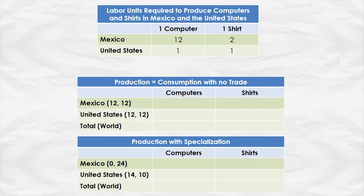Remember our basic data is in the top figure right here, and we want to answer: suppose there are 24 units of labor — 12 devoted to computers, 12 to shirts. How many computers and shirts in Mexico? Well, if Mexico devotes 12 units of labor to producing computers, and it takes 12 units of labor to produce one computer, then you get one computer. It takes two units of labor to produce one shirt, so if you devote 12 units of labor to shirt production, you get six shirts.